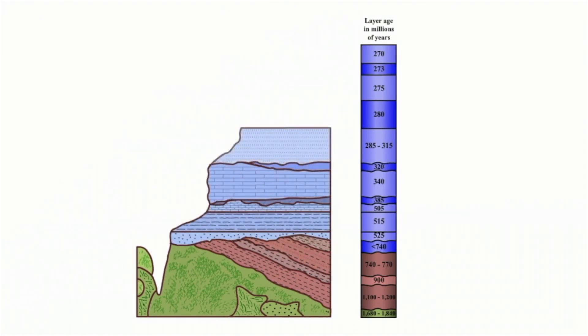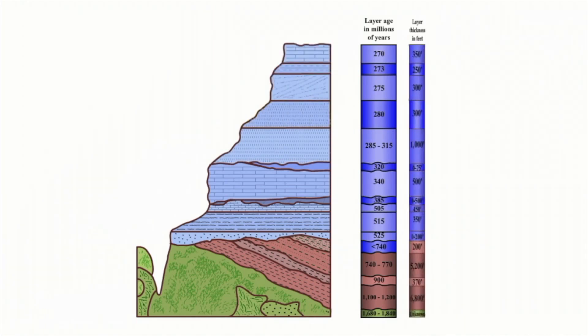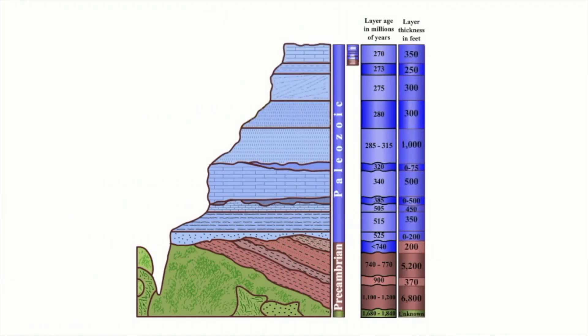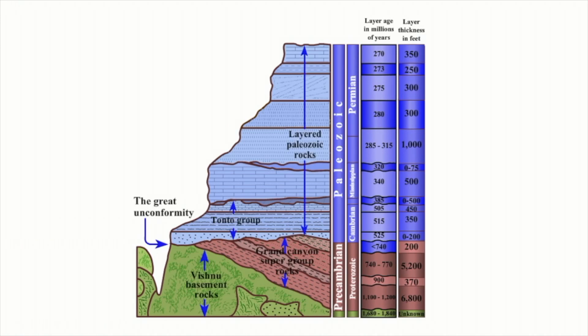Here, the top layer is a billion years younger than the layer beneath it. This period of time is so significant that geologists call it the Great Unconformity.